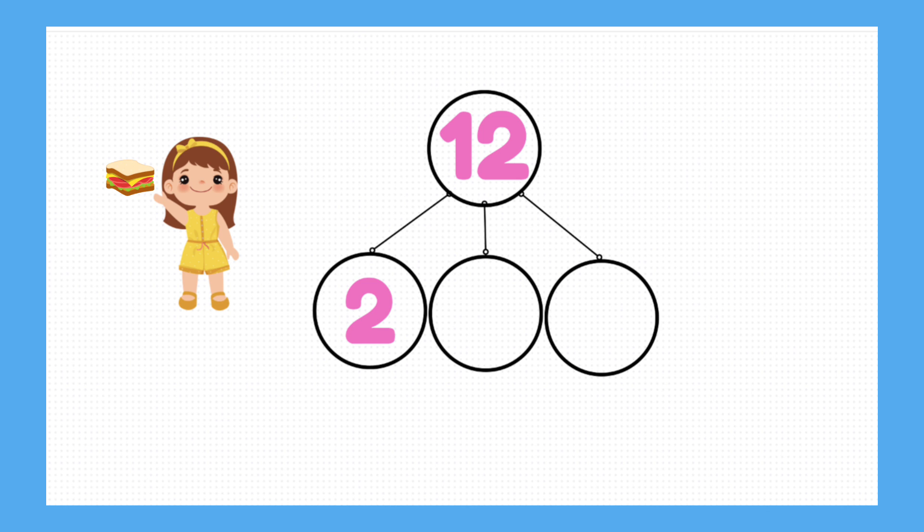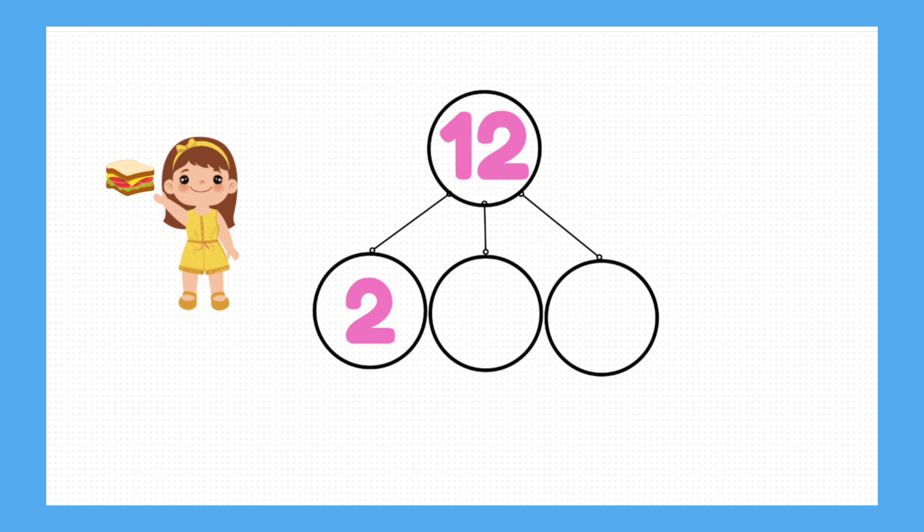Ella is having a picnic, and she's made 12 sandwiches all together. Her mum eats 2 sandwiches, while dad eats 5 sandwiches. How many sandwiches does Ella have left over?